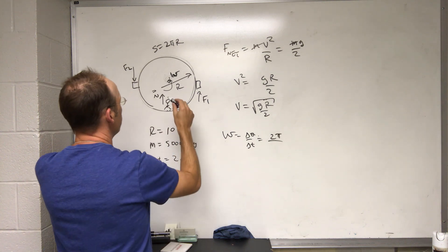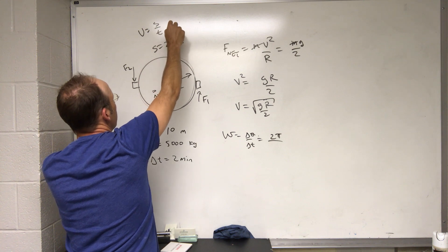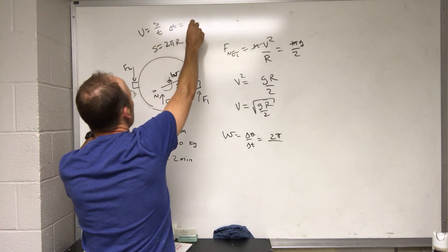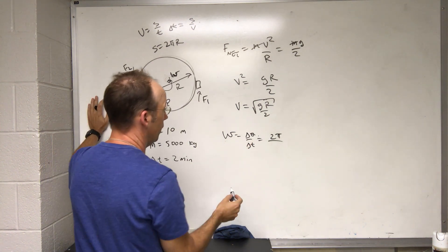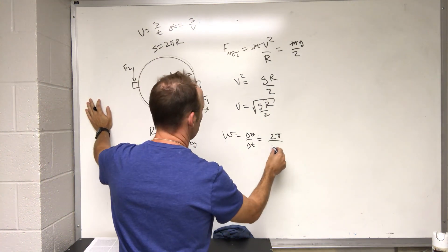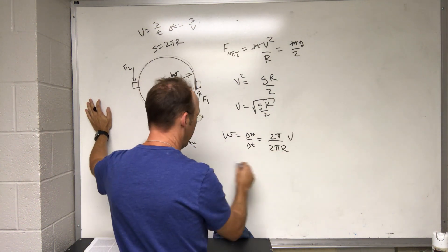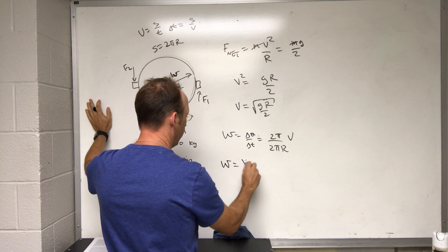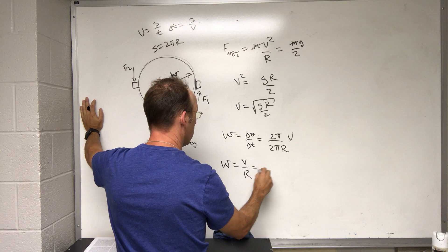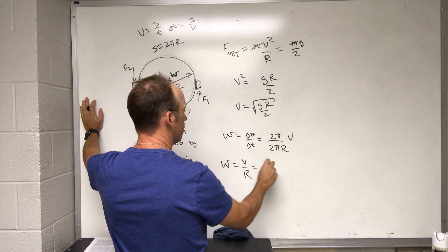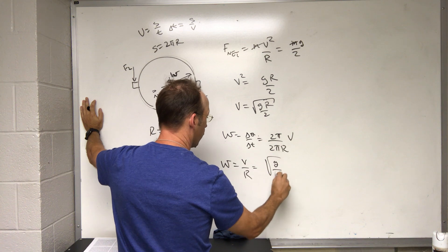Well, how far did it go? The distance around s is equal to 2 pi r, and the velocity is s over t. So delta t is going to be equal to s over v. So that's my time. I can put that down here and I get s which is 2 pi r times v. So in the end I get angular velocity is v over r.